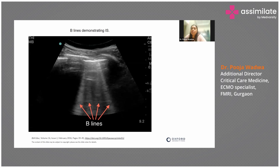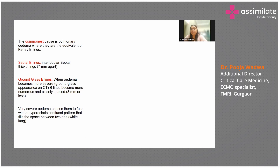The most common cause of B-lines is pulmonary edema. Septal B-lines may be due to interalveolar septal thickening. Ground glass B-lines occur when ground glassing becomes very dense, meaning edema is quite severe. In very severe edema, such as in severe ARDS, the B-lines fuse together and you get a white-out lung where you are not able to appreciate anything. Many of you must have seen this in COVID patients.